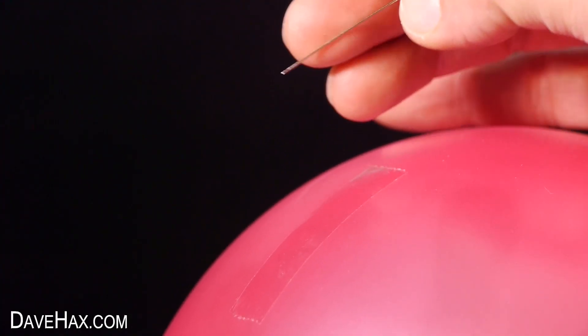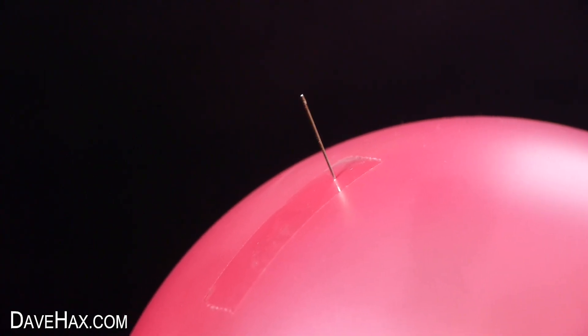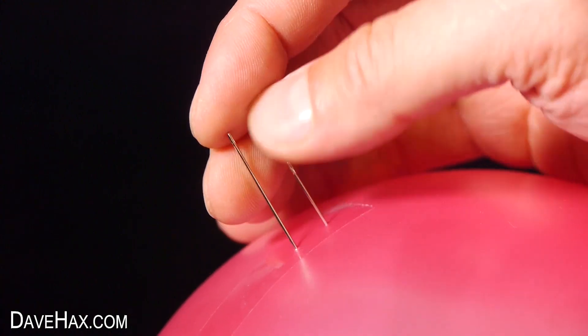You just need to take a needle and push it straight through the middle of the tape into the balloon. And it doesn't pop. Pretty cool, huh? You can actually do more than one needle and it won't pop the balloon.